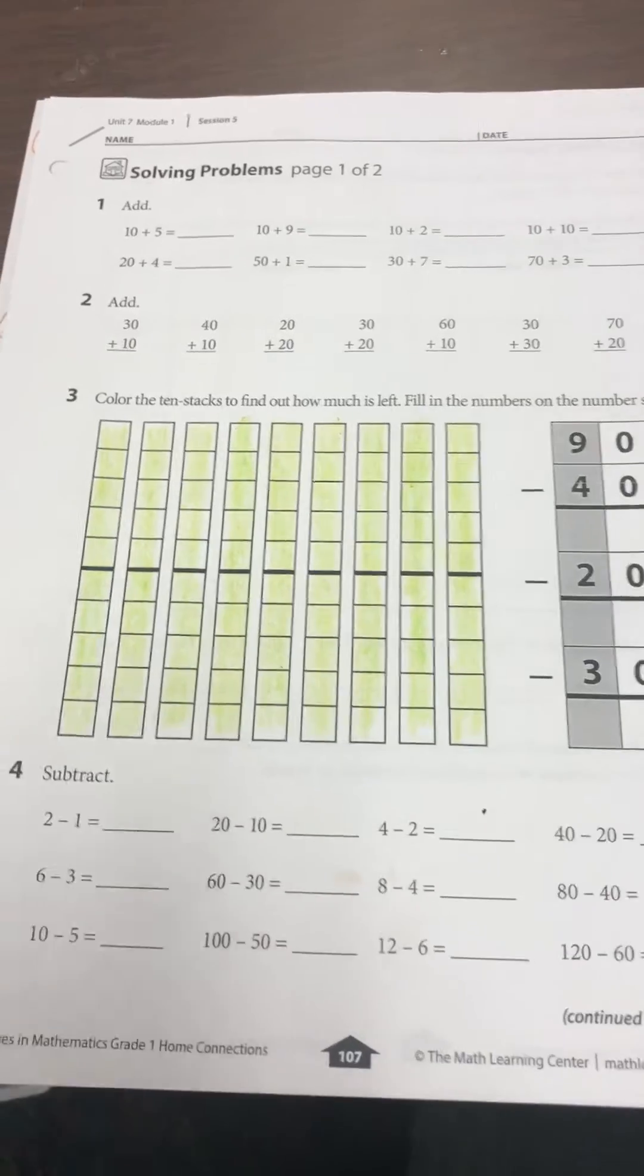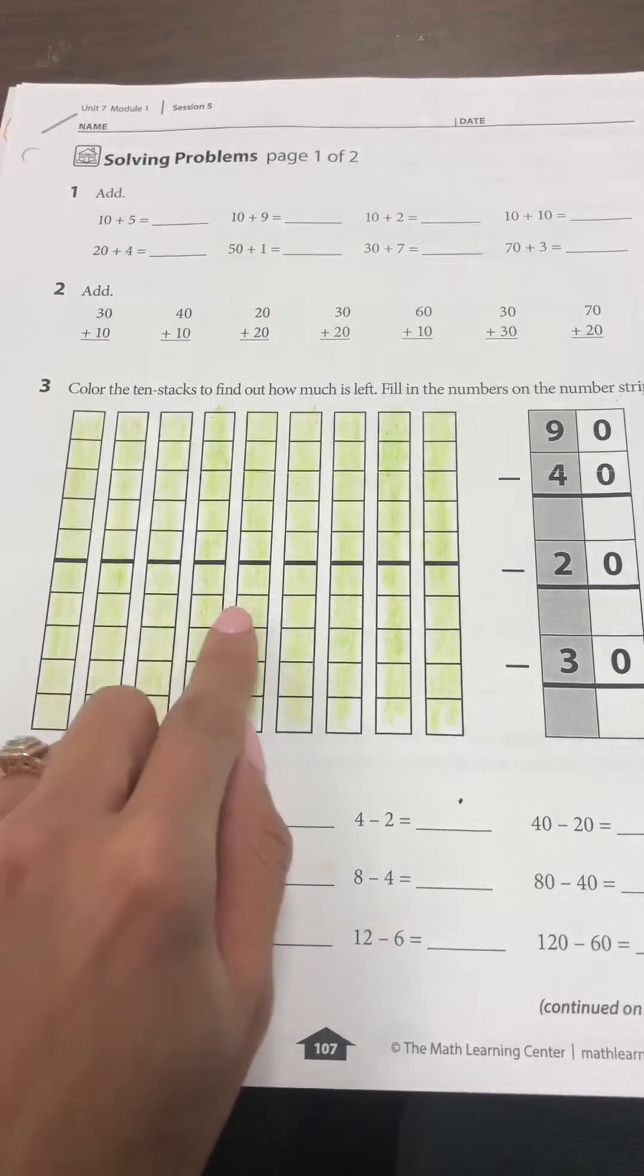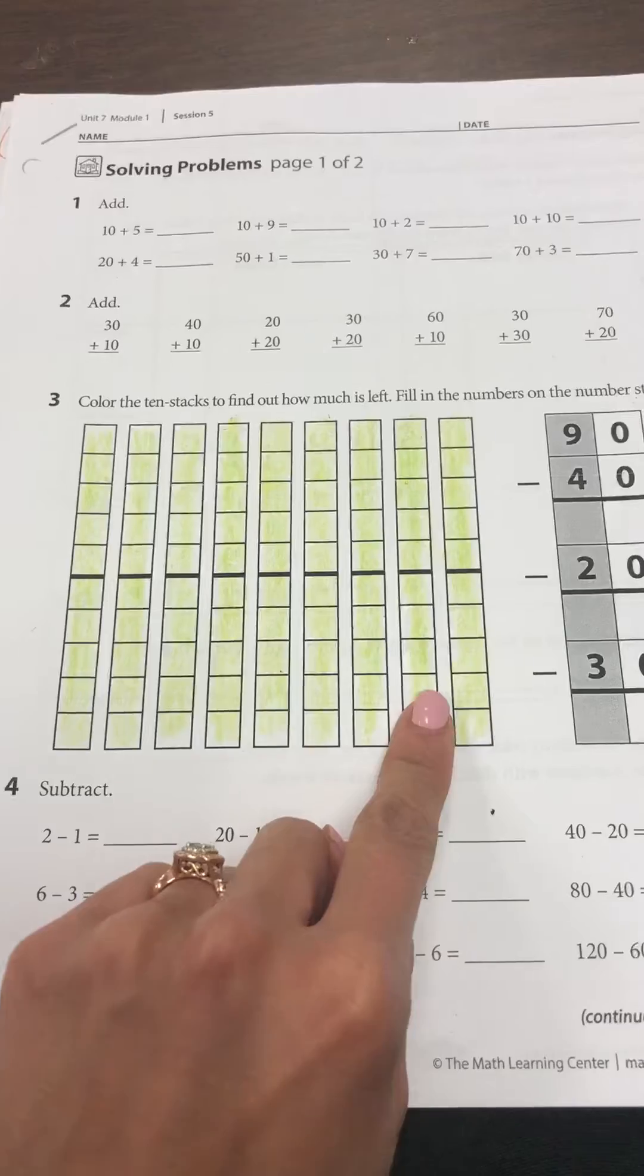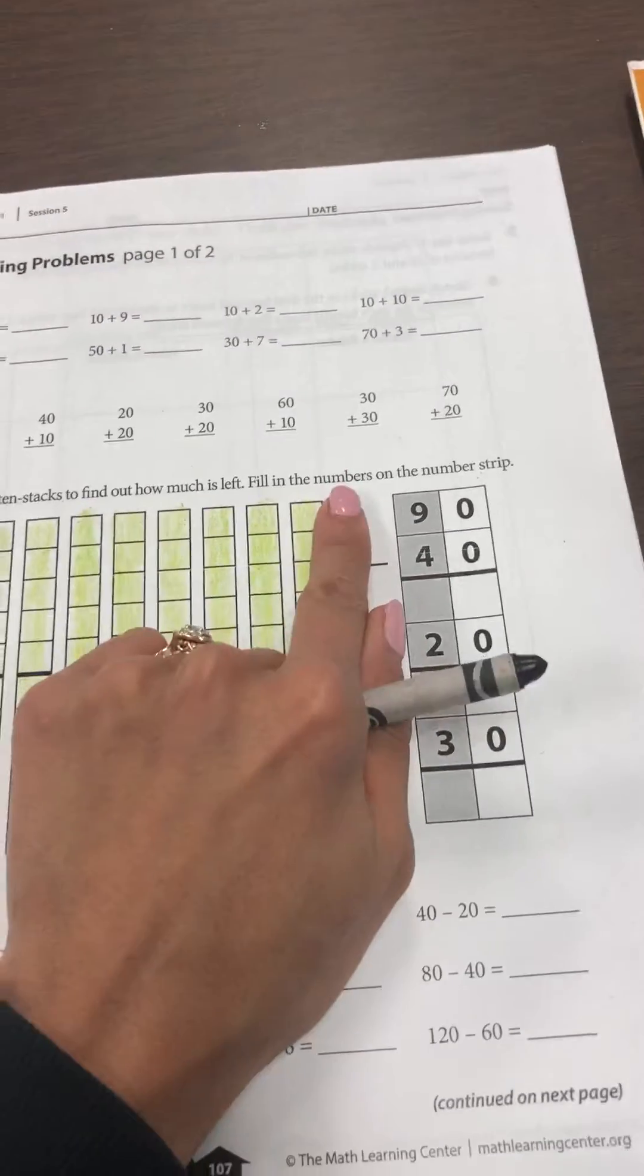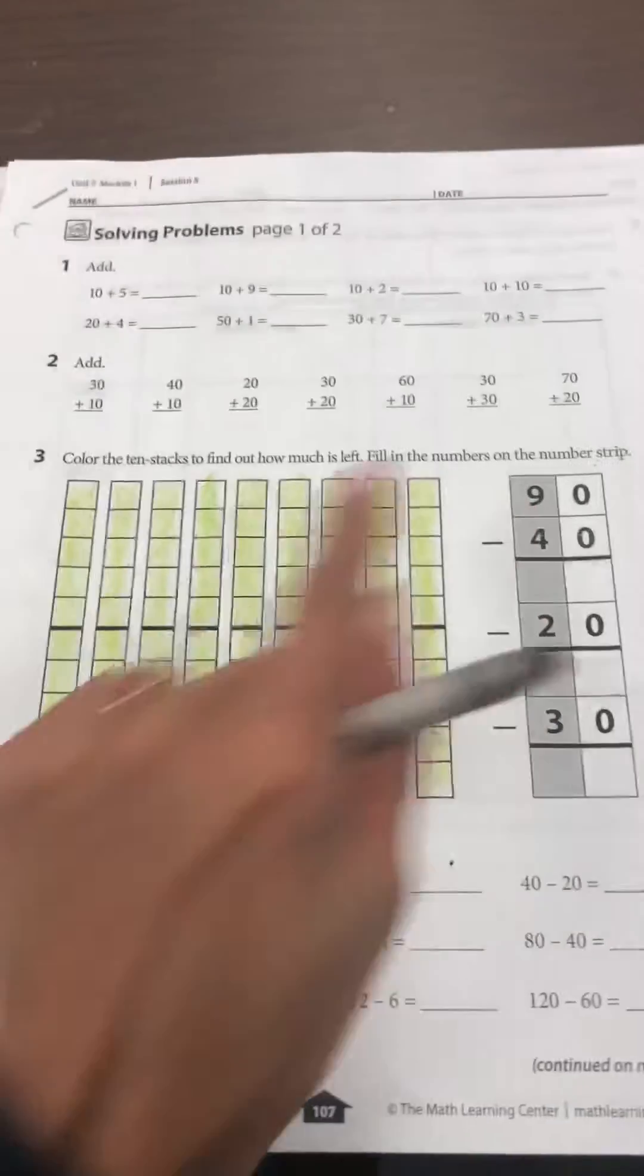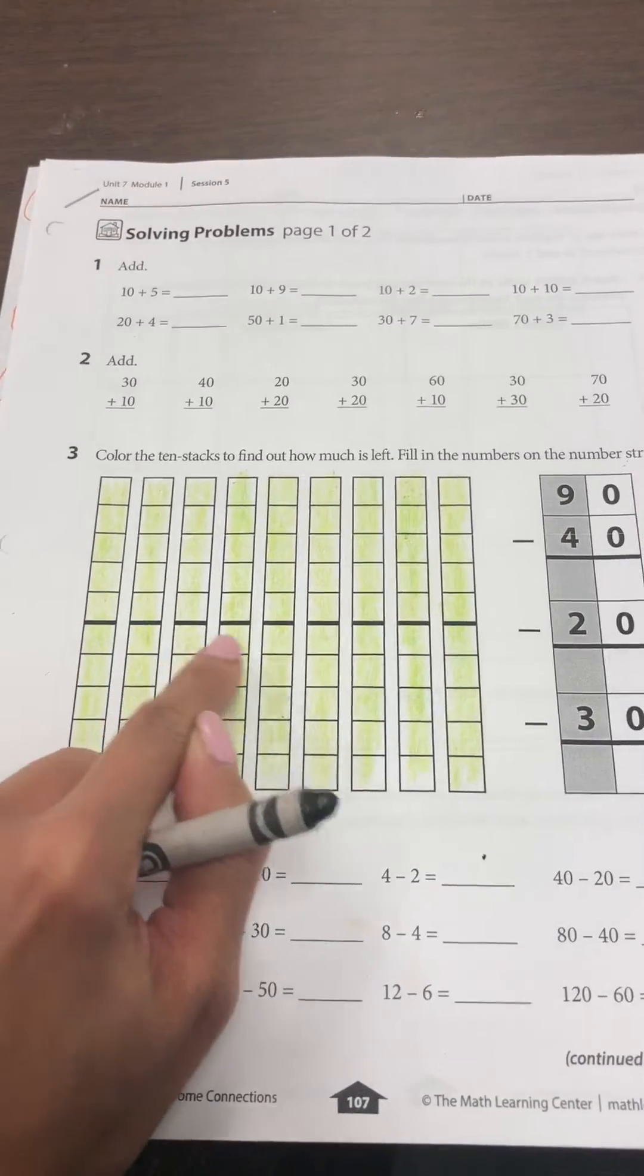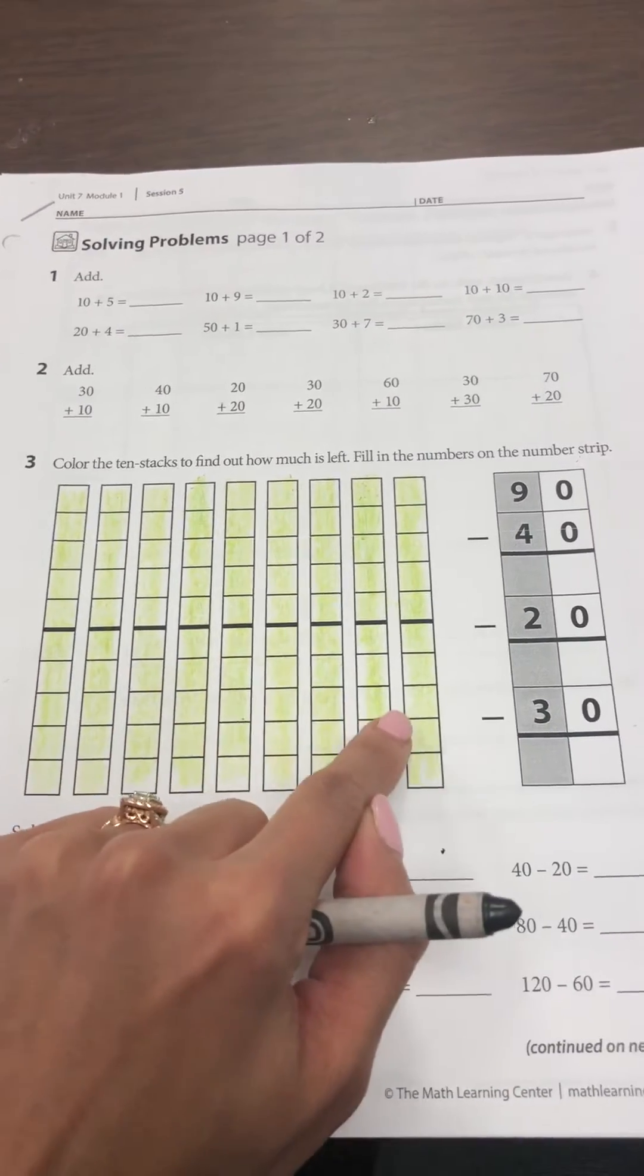The first thing you need to do is have your child color in all of these trains right here of ten. So once they're all colored in, then you're gonna look over here to your right and you're gonna see that it is the total of 90: 10, 20, 30, 40, 50, 60, 70, 80, 90.